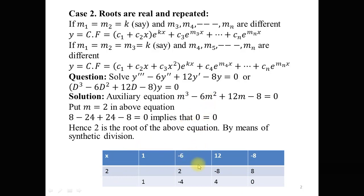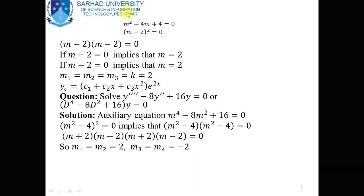The depressed equation is m² - 4m + 4 = 0. Using the formula (a - b)² = a² - 2ab + b², we obtain (m - 2)² = 0.